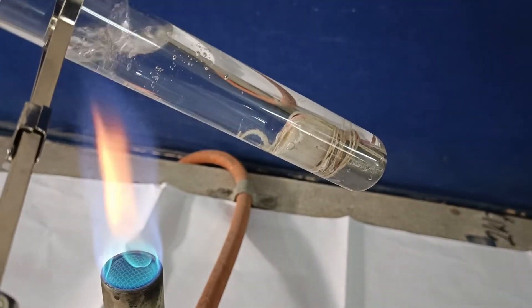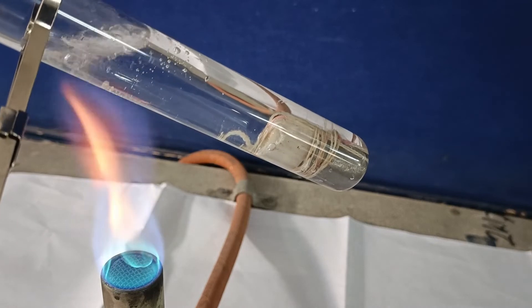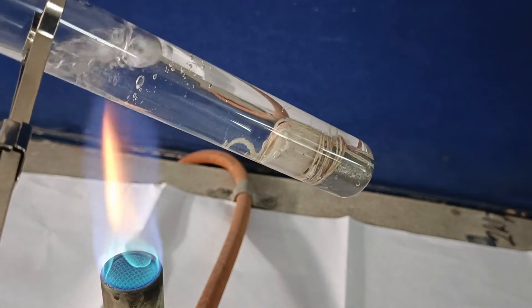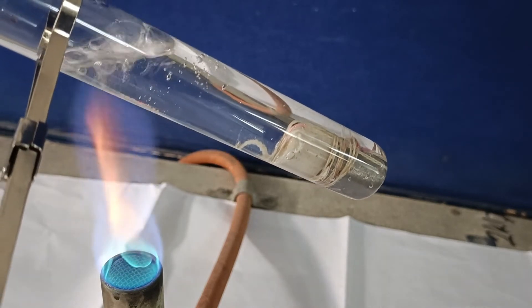You will notice that the water at the top starts boiling but the water at the bottom remains cold. This is evident from the fact that the candle made out of wax is not melting at all.